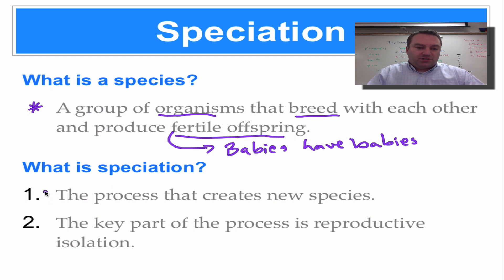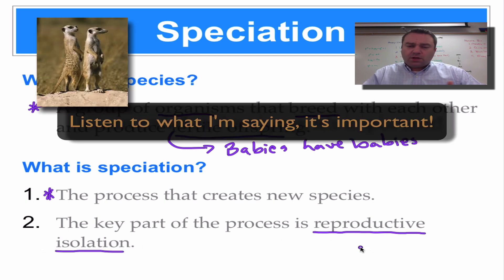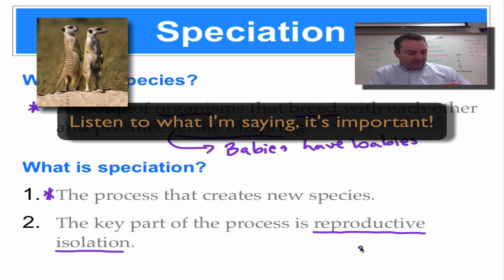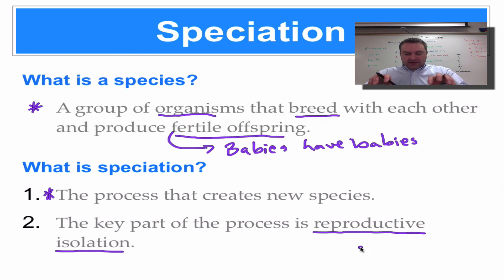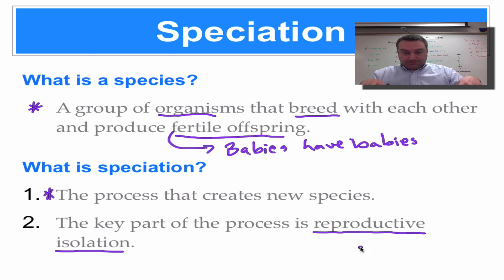Speciation is the process that creates new species, and it really depends upon a phenomenon called reproductive isolation. Reproductive isolation is simply a process where one population is not allowed to mate with another population. These two populations can then diverge — if you remember, divergent evolution — they can diverge into different species. But if the two gene pools intermingle, they're going to maintain their same species status. So reproductive isolation is really, really important.